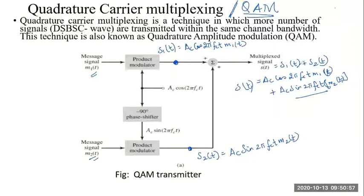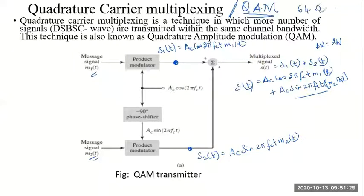It is a multiplexed signal — there are two messages but both occupy the same bandwidth as one DSBSC signal, which is 2W. Within a bandwidth of 2W, we are now able to send two messages. This technique can be modified further — we can send 16 or 64 messages. Today, 64-QAM is commonly used where 64 different messages are sent on the same bandwidth.